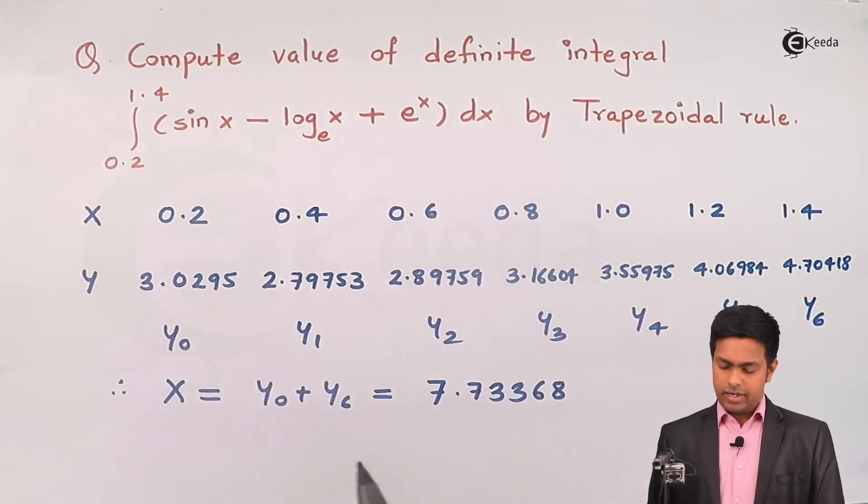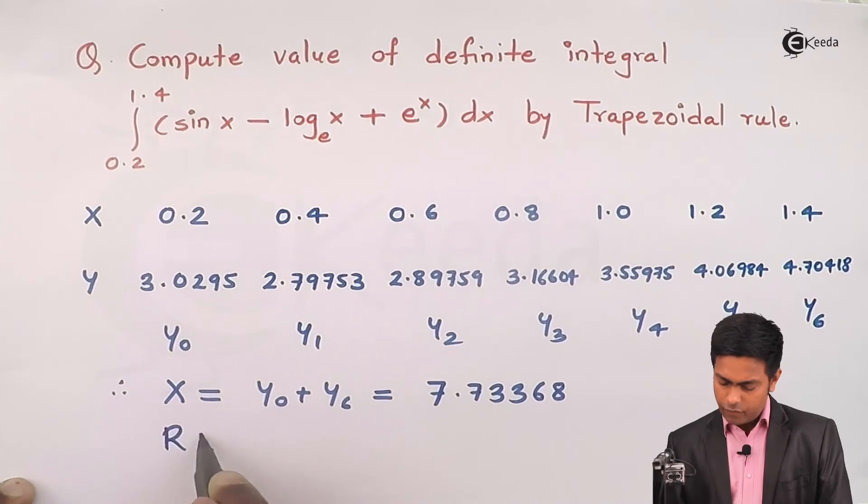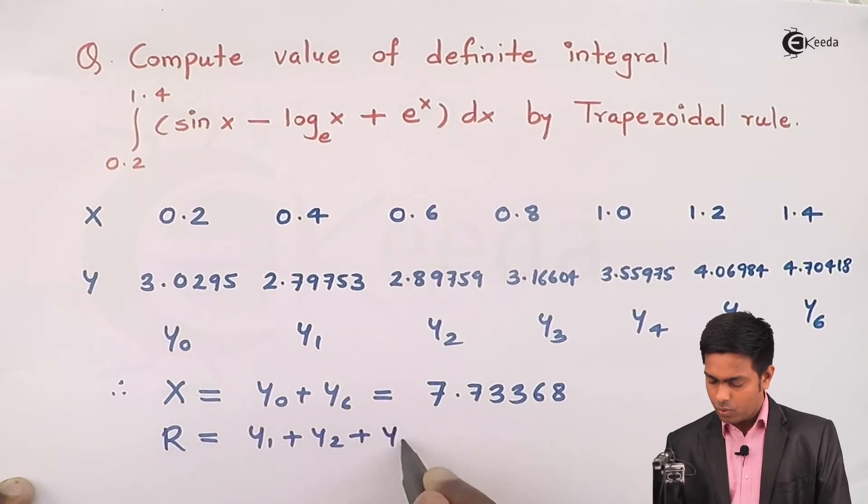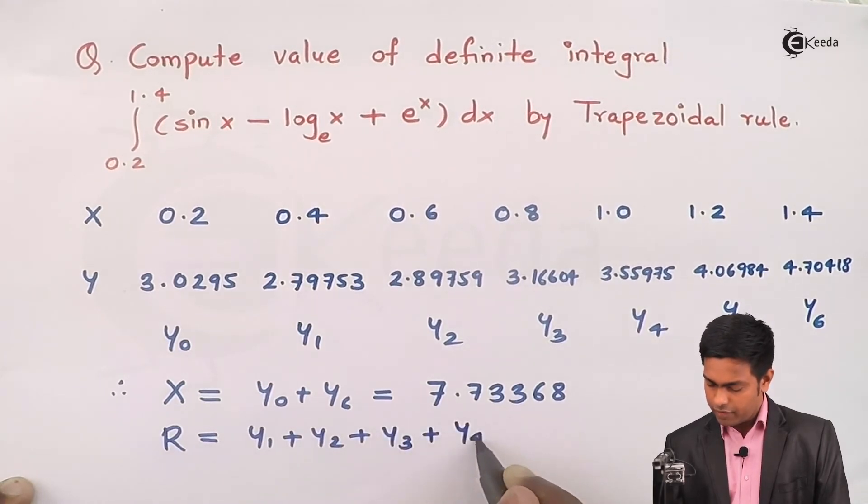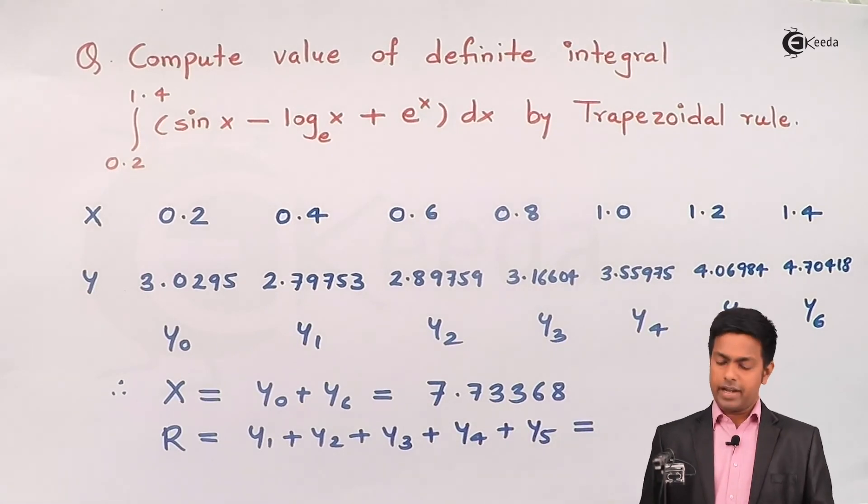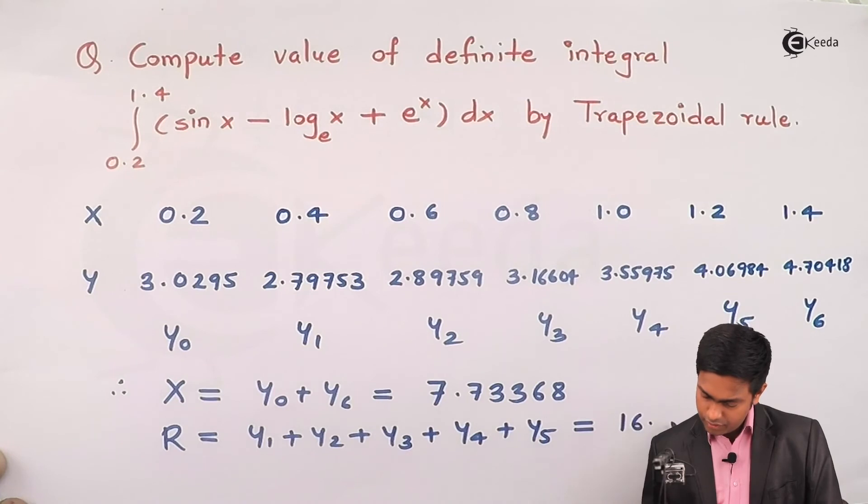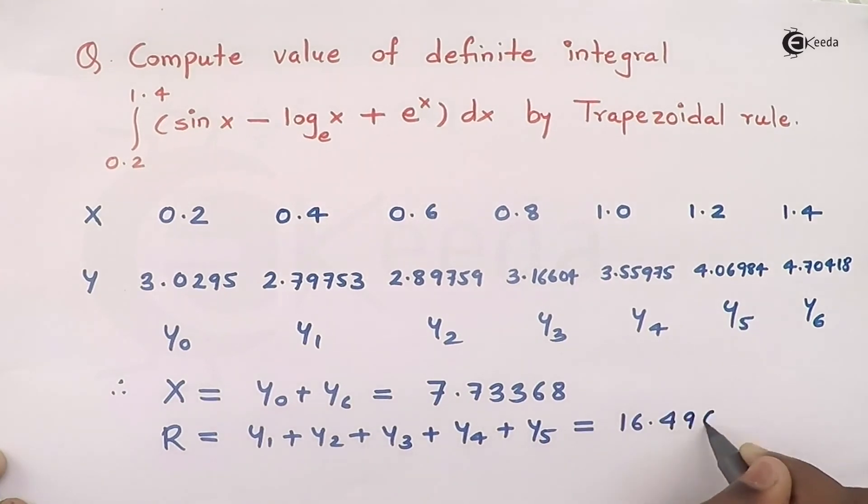Next, let's get the value of R, and for that we have to add y1, y2, y3, y4, and y5. So by adding all these values in the calculator you will get 16.49075.